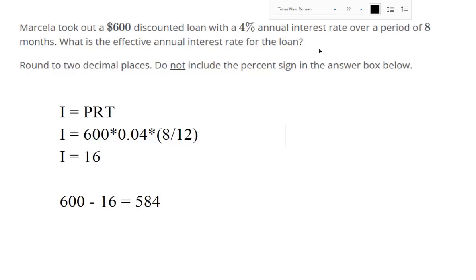They gave us $584, right? We tried to take out a loan for $600, but they already took out the interest to make sure they get it back. So, what's the effective annual interest rate? What would it take to get us back up to $600?